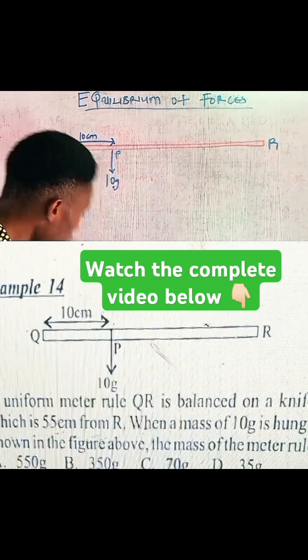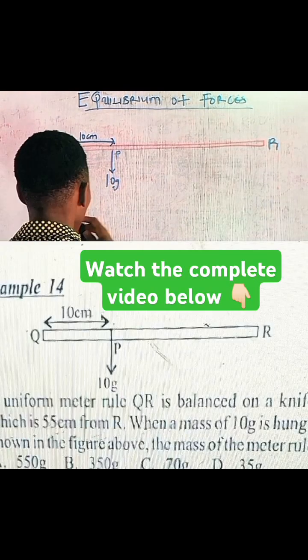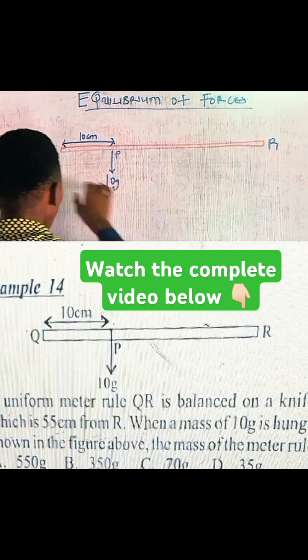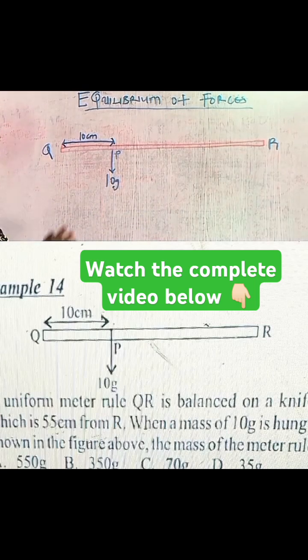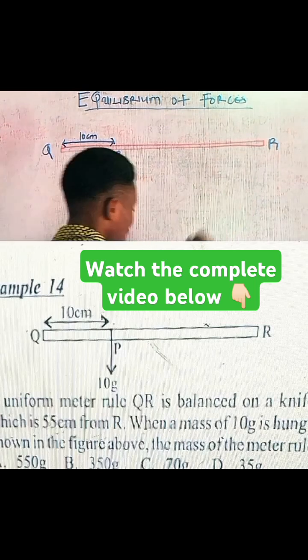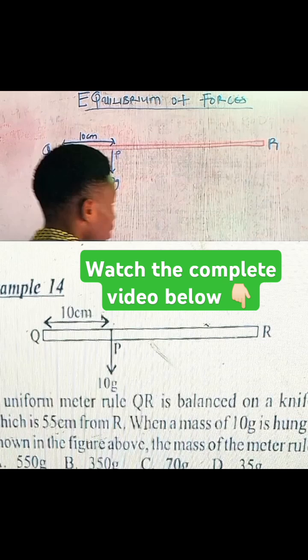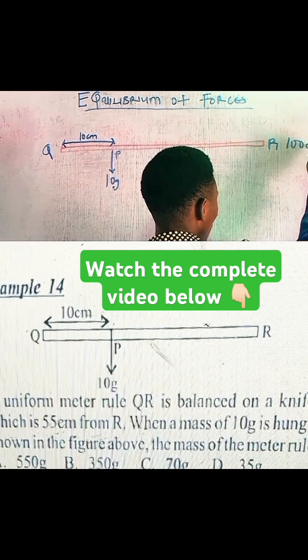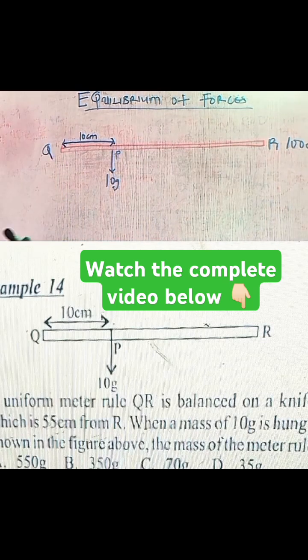A uniform meter rule QR - uniform meter means it's going to be 100 centimeter mark. This will be 100 centimeter mark. The uniform meter rule is balanced.